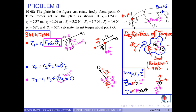However, theta3 is 0 according to this configuration. This is because the extension of F3 goes through the pivot point 3, so that it does not contribute to the net torque.